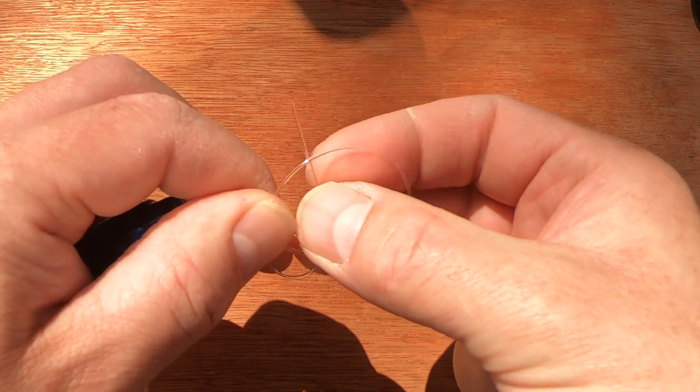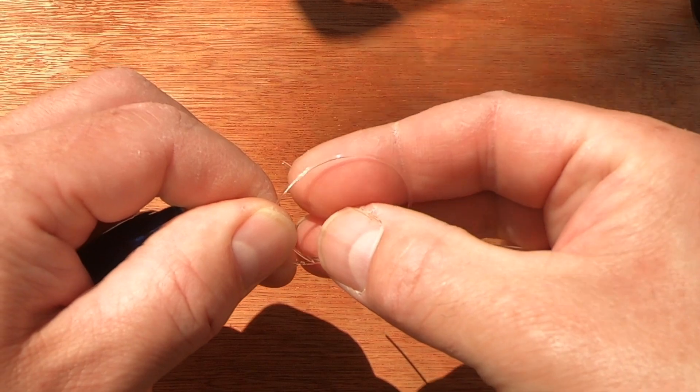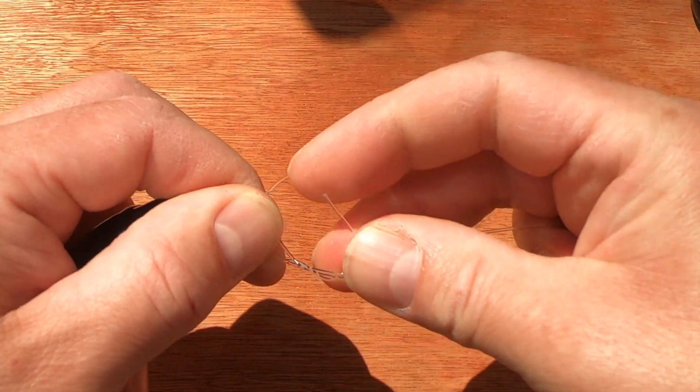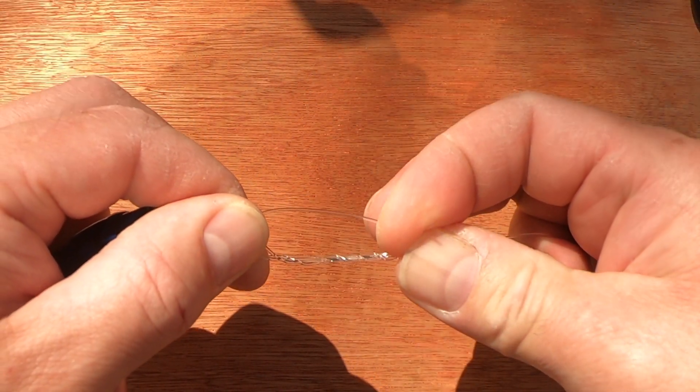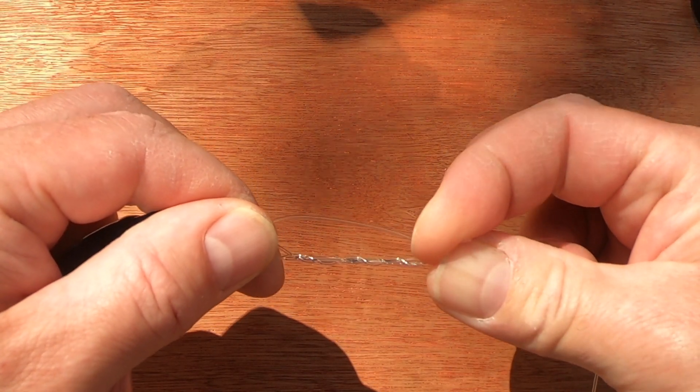All you do then, depending on the strength of your line, is wrap through the loop and around the bottom and the main line as many times as you require. The thinner the line, the more wraps you will need. Thicker line such as this, three to four wraps is probably enough. I think I've done five, that's probably too many.